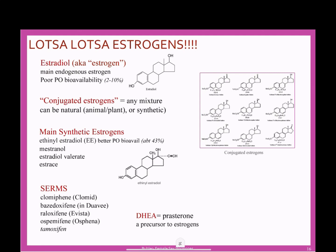Now we're going to hit estrogens. Just like we had a lot of progestogens, we've got a lot of estrogens. Our bodies actually make many different estrogen compounds. Estradiol is the one that is most commonly made in the highest concentration, so when we're talking about physiological effects we're usually talking about estradiol — we normally just say estrogen. Estrogen has very poor bioavailability when taken orally.